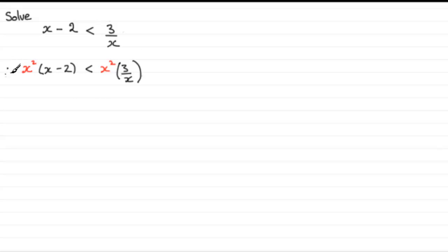Now all we need to do is expand the bracket. And so if we expand the bracket here we've got x cubed and then we've got x squared times minus 2 is minus 2x squared. We've got less than and obviously this x cancels out with one of the x's in the x squared here just leaving us with 3x.